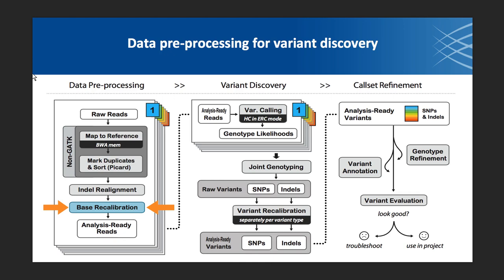We are here in the preprocessing pipeline, and in our preprocessing pipeline we've left in the indel realignment, even though we no longer require it for our assembly-based callers, haplotype caller and Mutect2. Just to remind you that if you are using traditional pileup callers, such as Unified Genotyper, we still recommend that you do indel realignment. One thing that has changed for those types of workflows is that indel realignment is coming before base recalibration — it used to come after. In our hands, there is not much difference whether it comes before or after.